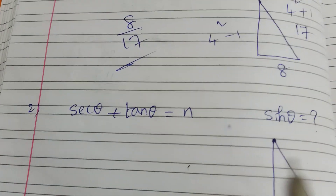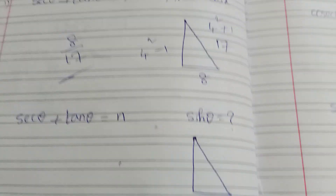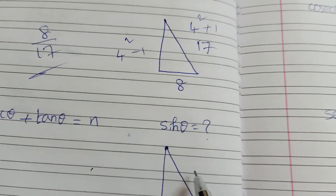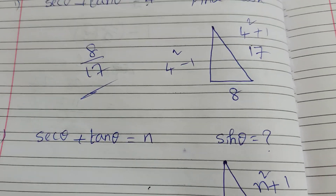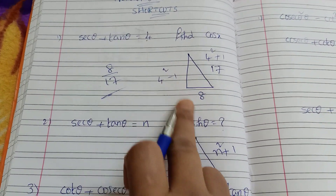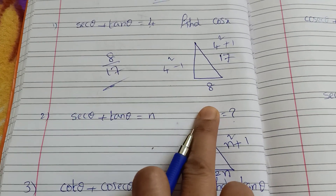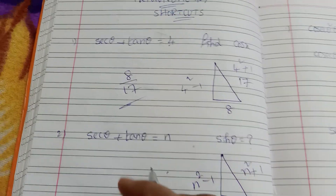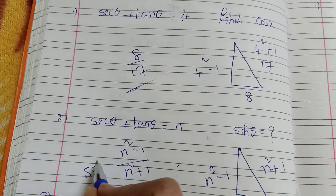Now suppose n is in place of x. In that n place: 2n is the opposite side, n² + 1 is hypotenuse, and n² minus 1 is adjacent. So sin θ = opposite by hypotenuse = (n² minus 1) by (n² plus 1). The answer for sin θ is (n² minus 1) divided by (n² plus 1).